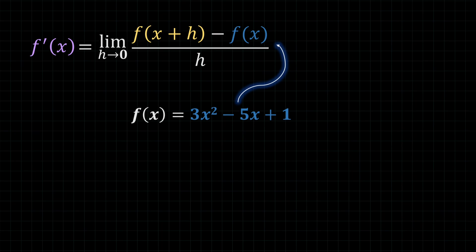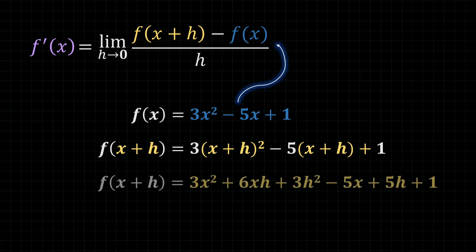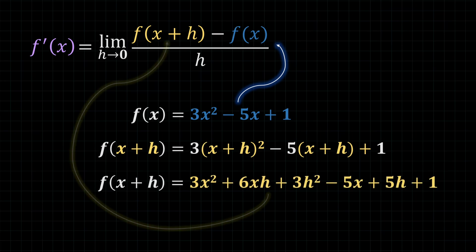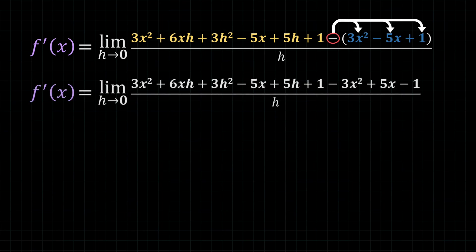For f of x plus h, we substitute x plus h into where x is in the original function, and then we can expand and simplify to give us something that looks like this, which we can plug in where f of x plus h is, giving our definition of derivative this appearance. The brackets on the right-hand side are super important because we have to distribute the subtraction sign into the brackets, making it look like this.